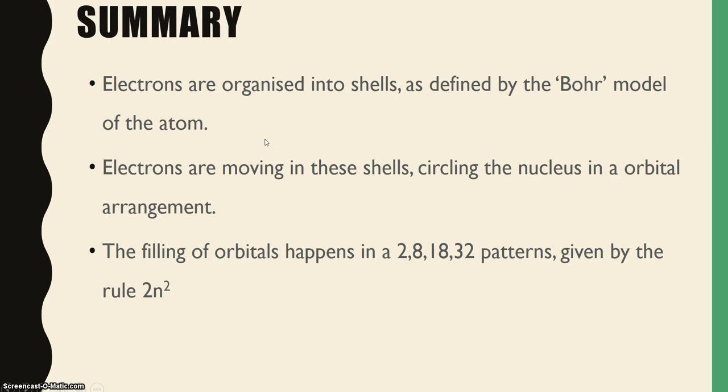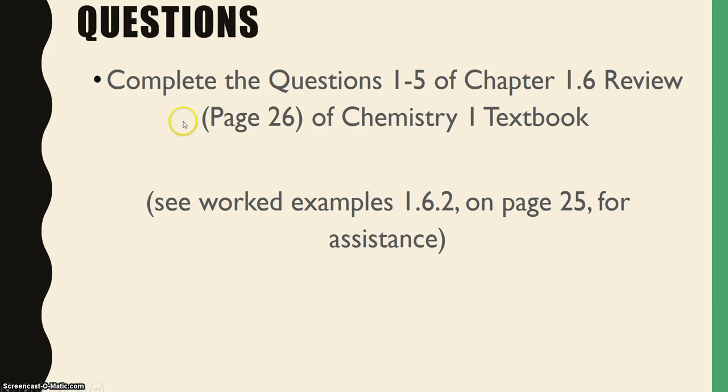Summary of today's video. Electrons are organized into shells as defined by the Bohr model of the atom. We use spectral evidence to look at that, where electrons are excited and they release light when they come back down to their ground state. Electrons are moving in shells based on this evidence. Circling around the nucleus in an orbital arrangement, and the filling of the orbitals happens in a 2, 8, 18, 32 pattern given by the rule 2n².